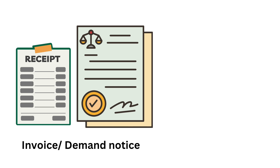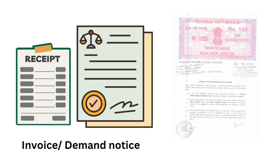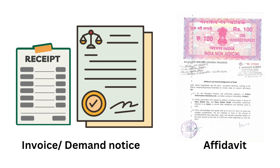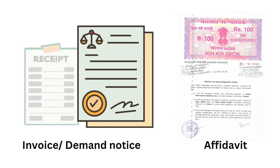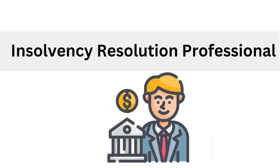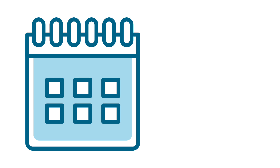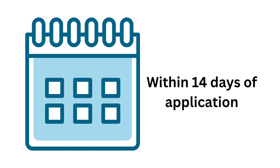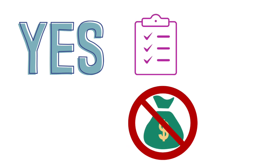While submitting its application to the authority, the operational creditor has to provide a copy of the invoice or the demand notice, an affidavit stating that there is no dispute notice, and that the debt is unpaid. The operational creditor can also propose the name of an insolvency resolution professional. The authority then has to take a decision within 14 days from the date of the application. The authority says yes to the application if it is complete and there is no payment made to the operational creditor.